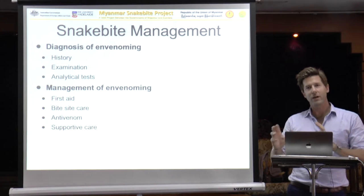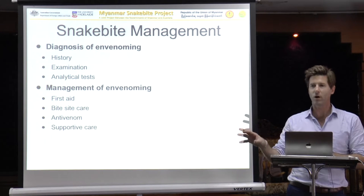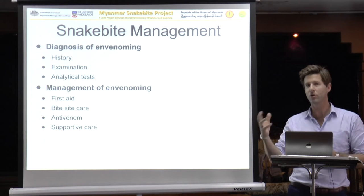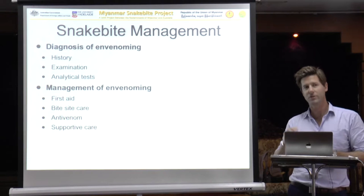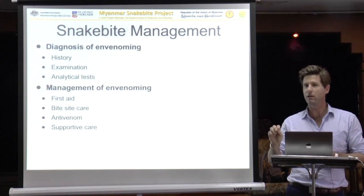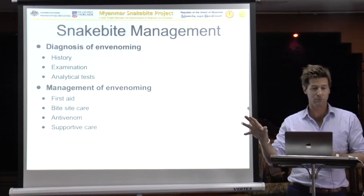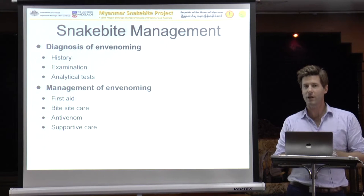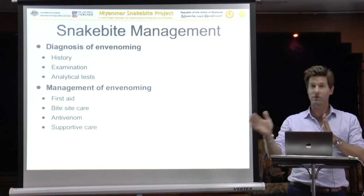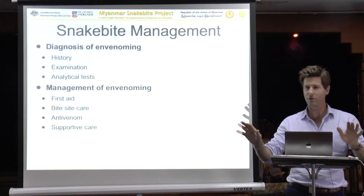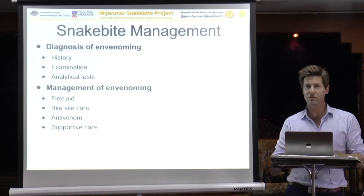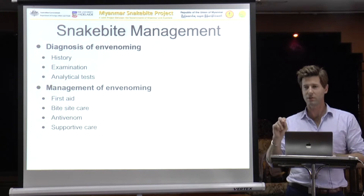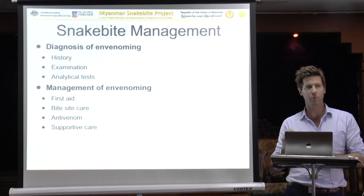Your examination should be targeted at trying to detect the sorts of problems that Professor White highlighted this morning. You know that snake bite causes hemorrhage, so look for hemorrhage. You know that it causes neurotoxicity, so look for neurotoxicity. This is a targeted examination looking specifically for findings of envenomation. For analytical tests similarly, you have a history that makes you either suspect or not suspect envenomation, and an examination which tells you yes or no. Then you do a couple of small tests to confirm that opinion. You don't need lots of tests, but the whole blood clotting time is very important to help your decision making.